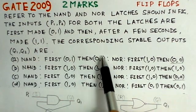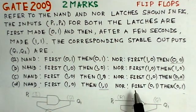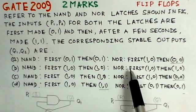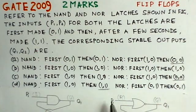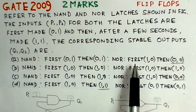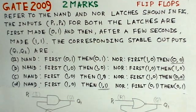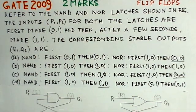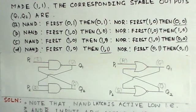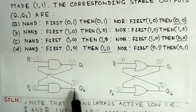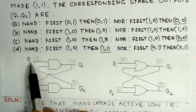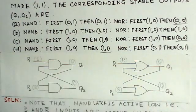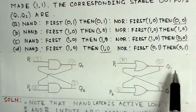We notice the corresponding stable outputs Q1 and Q2. Outputs like 0,0 and 1,1 are not actually stable outputs, while others are. Looking at the figure, this is the NAND latch and this is the NOR latch, with P1 and P2 as inputs and Q1 and Q2 as outputs per the problem notation. Similarly for the NOR latch, P1, P2 and Q1, Q2 are labeled.